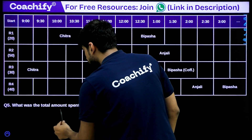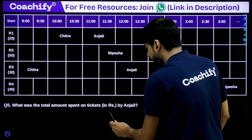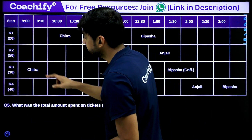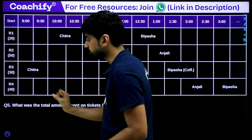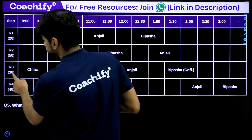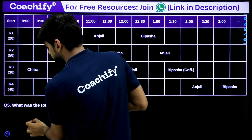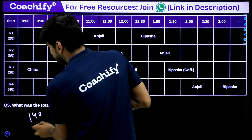Question 5: What was the total amount spent on tickets by Anjali? Anjali took four rides. Adding up: ride 1 (20) + ride 3 (30) + ride 2 (50) + ride 4 (40) = 140 rupees.